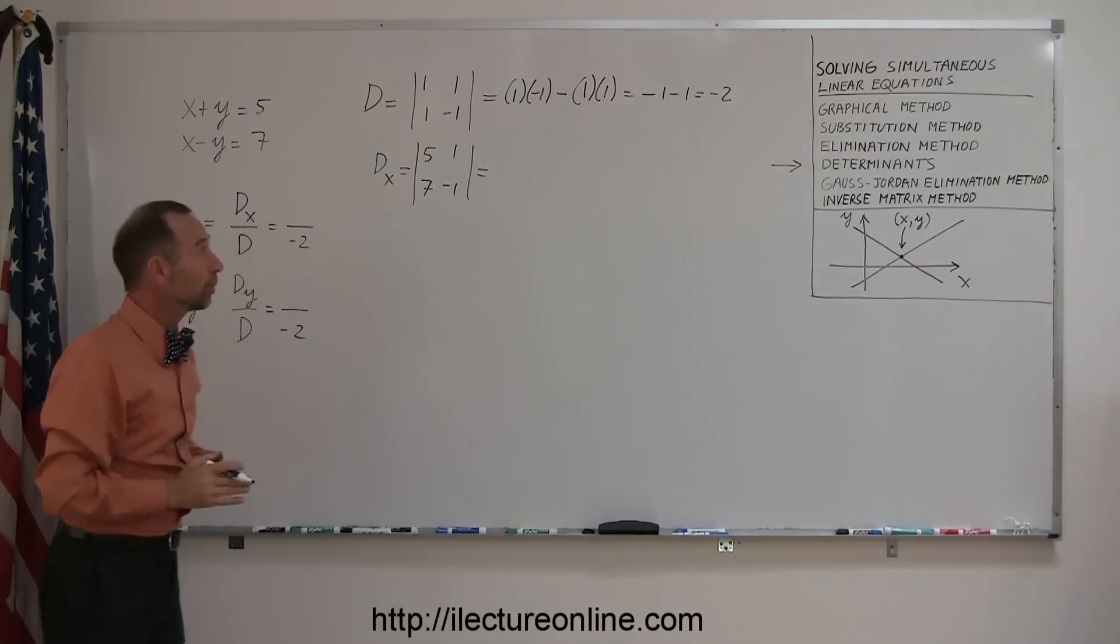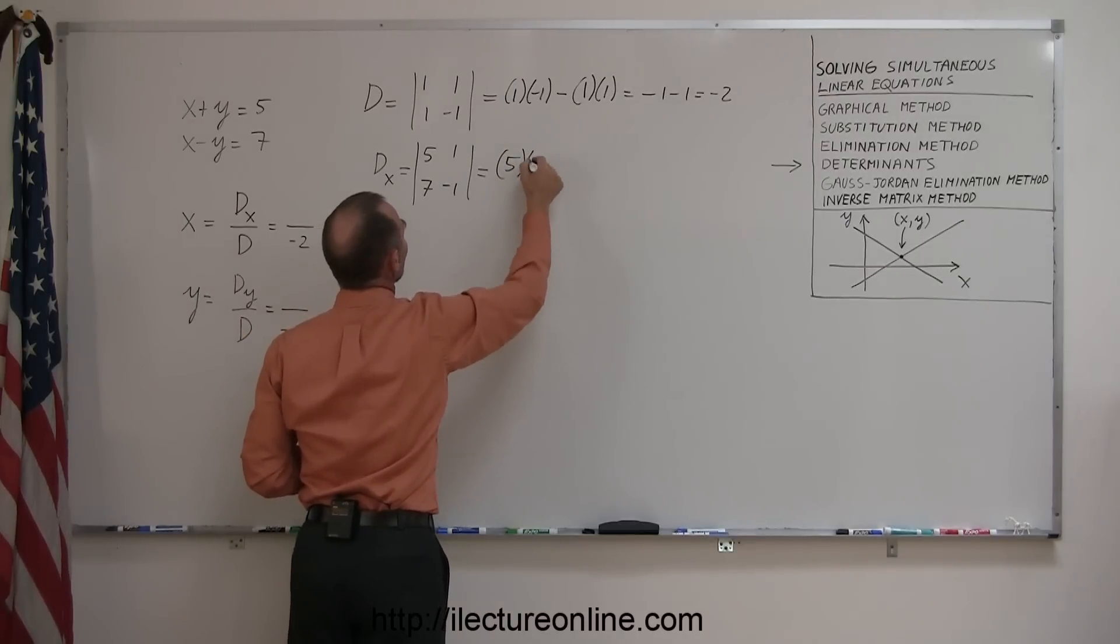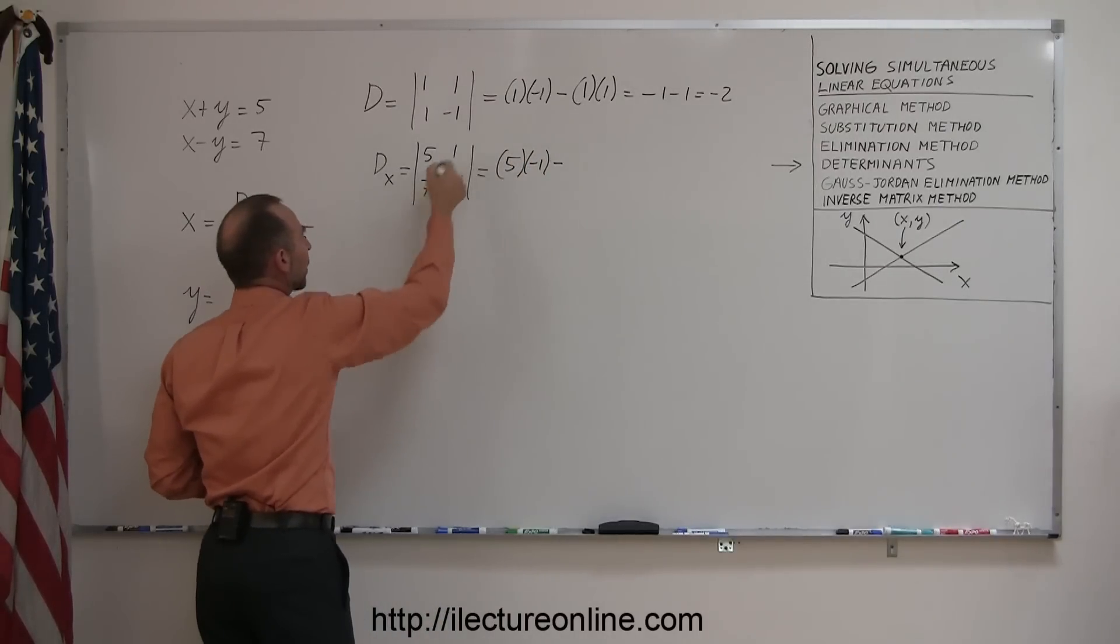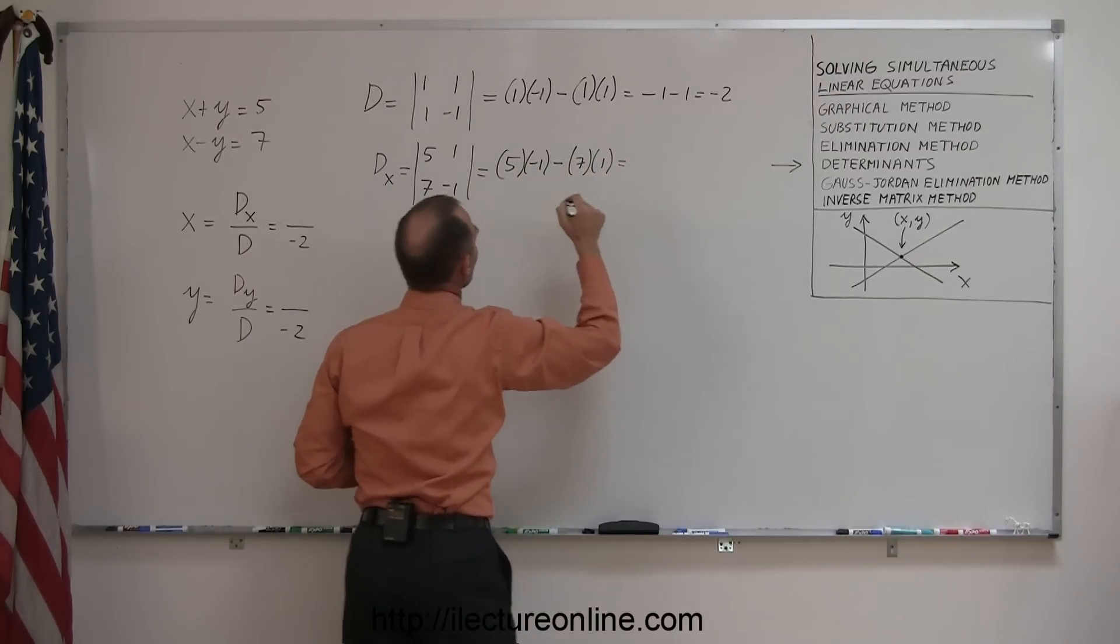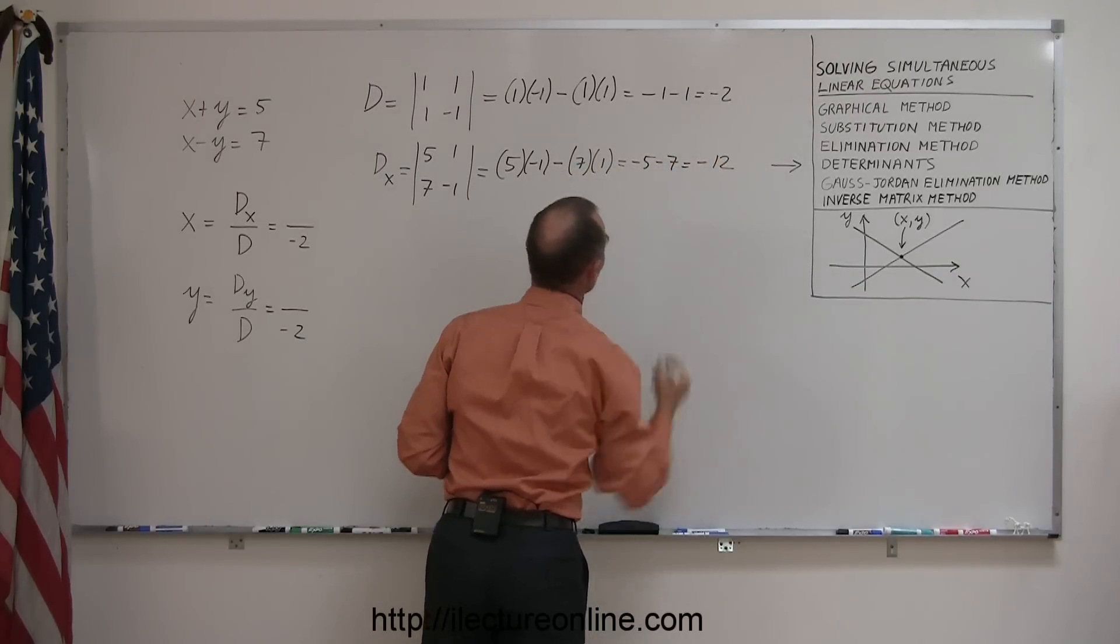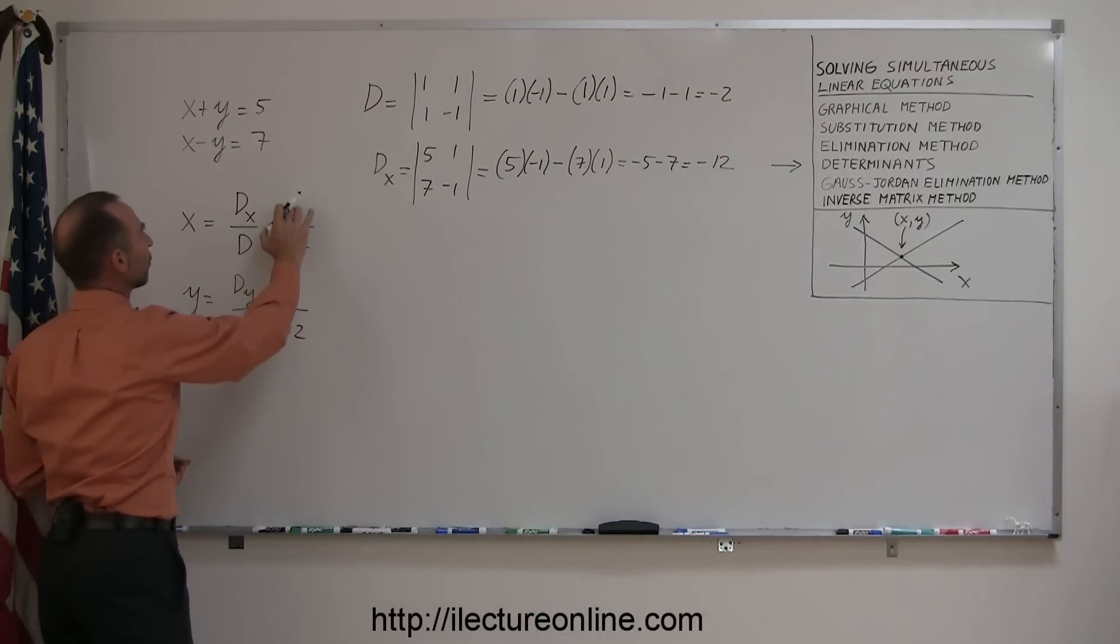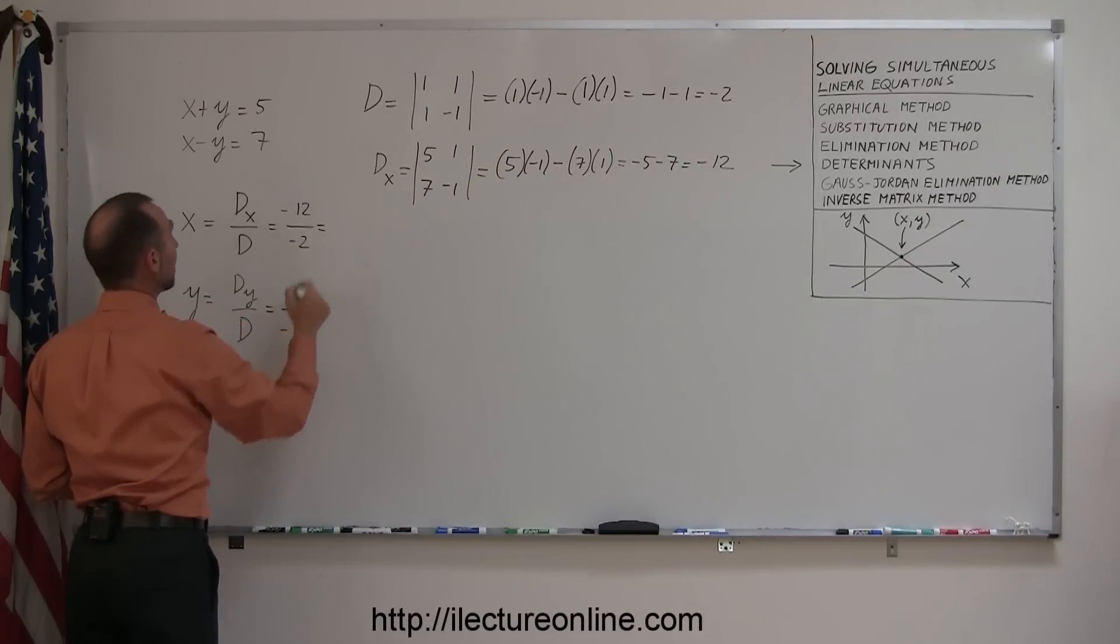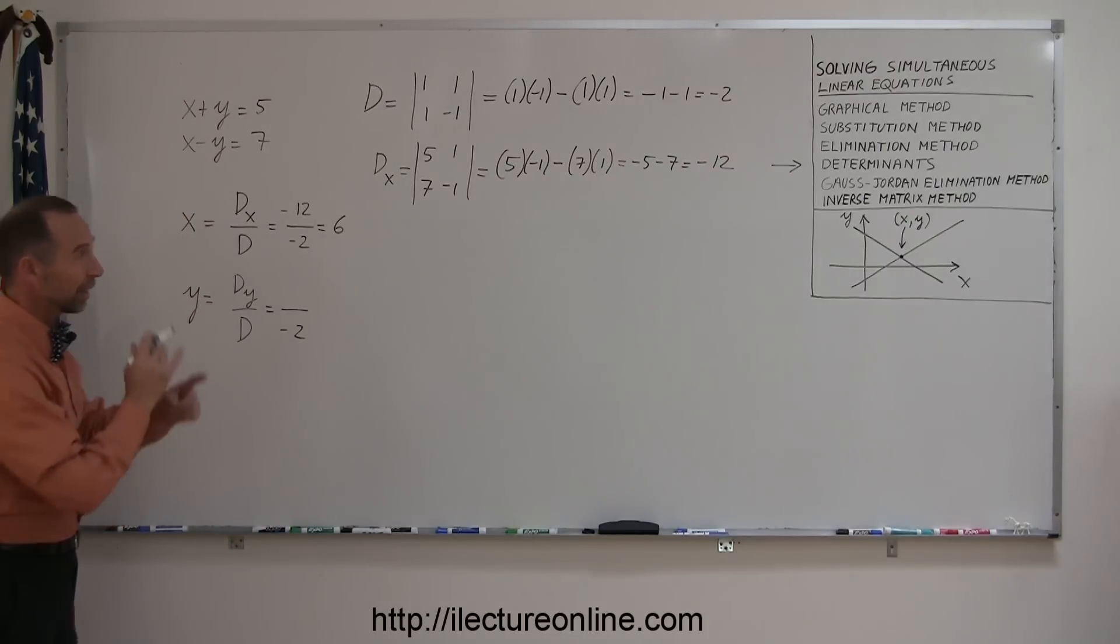To solve the determinant, we multiply the two numbers in the diagonal, 5 times negative 1, and subtract from that the product of 7 and 1. This is 5 times negative 1, which is minus 5, minus 7 times 1, which is minus 7, or minus 12. So d sub x equals minus 12. If I divide minus 12 by minus 2, I get positive 6. So the x coordinate is going to be 6.